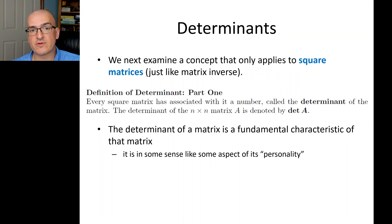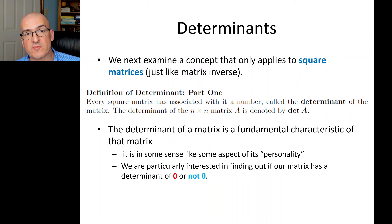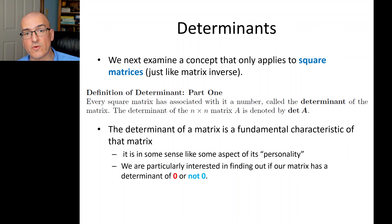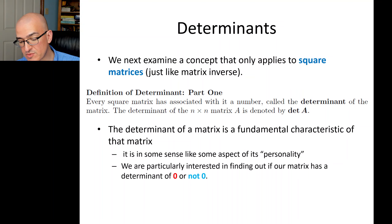In particular, we would classify a matrix into two categories based on its determinant. A matrix that has a determinant of zero would go into one category, and a matrix that has a determinant that is not zero would go into another category. We'll see that there's a connection between the determinant being zero and the inverse not existing.